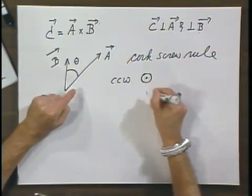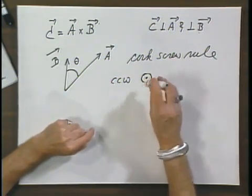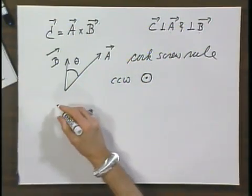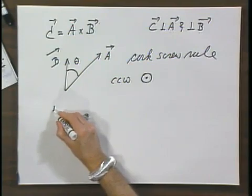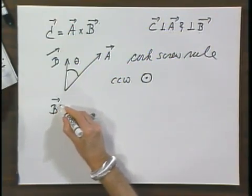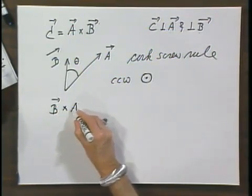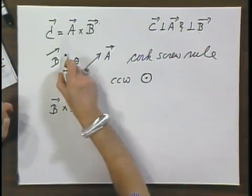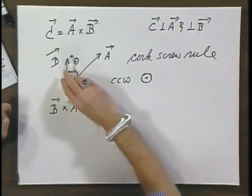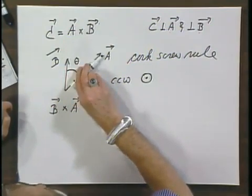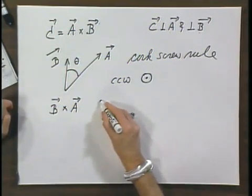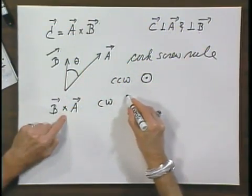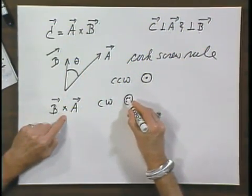A vector is an arrow, and this is the tip of the arrow, and I see the tip so it's coming towards me. If, however, I had B cross A, then I have to rotate B — which is the one that is first mentioned — over the smallest angle to A. That now is a clockwise rotation and so this vector goes into the paper.